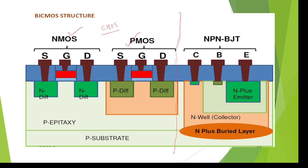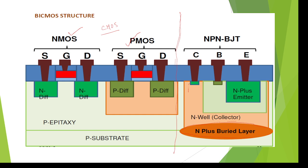For the bipolar transistor, the first step is forming an N+ buried layer, which has a higher concentration of electrons. After that, electrons are diffused further — this process is called the N-well process, because electrons are diffused into the P-substrate. This N-well region acts as the N+ collector terminal.